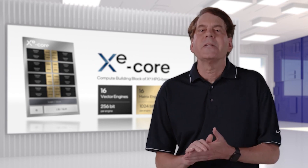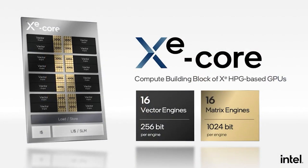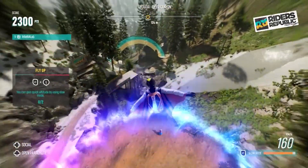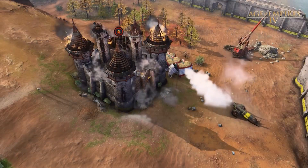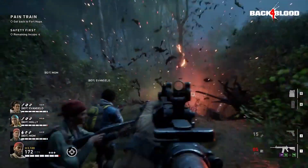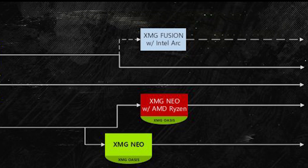There's an XMG Fusion gaming laptop that has announced a 2022 roadmap. This is going to be based around a 12th generation Intel CPU. You can see the roadmap published by XMG, showing end of Q2 to early Q3 an XMG Fusion with Intel Arc. It's important to realize this is not confirming the release date of Arc, because Arc could release earlier and the product could then release later.